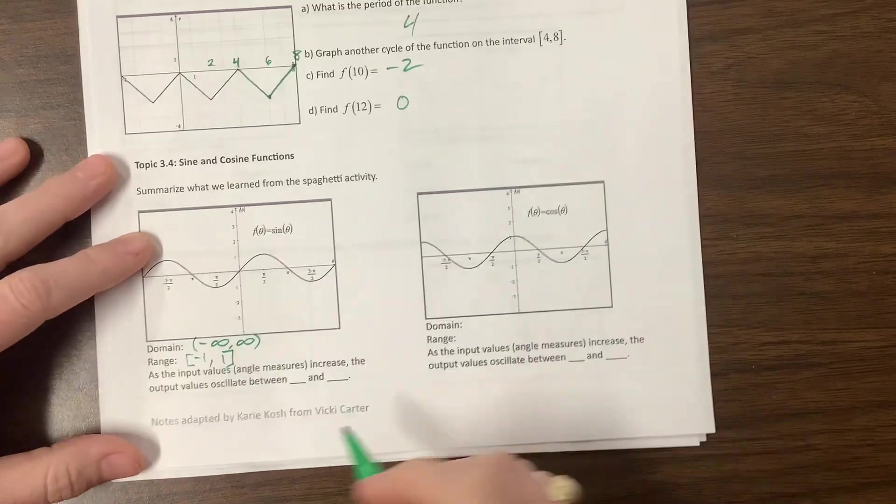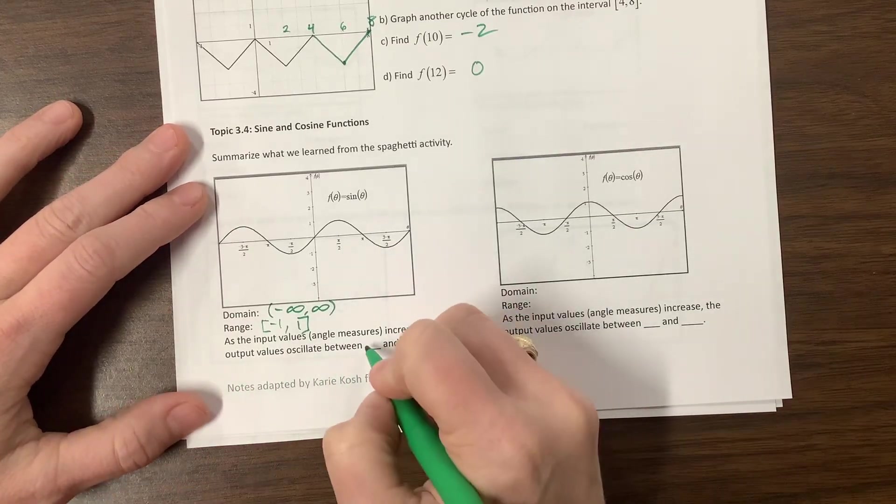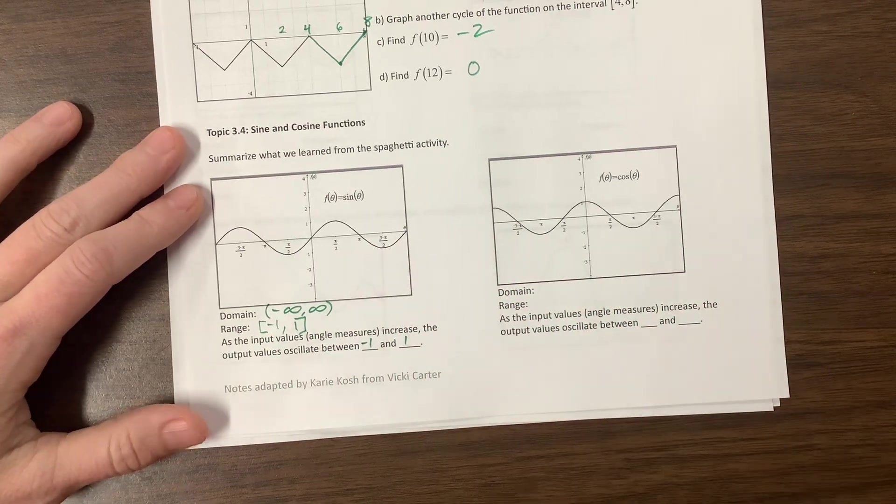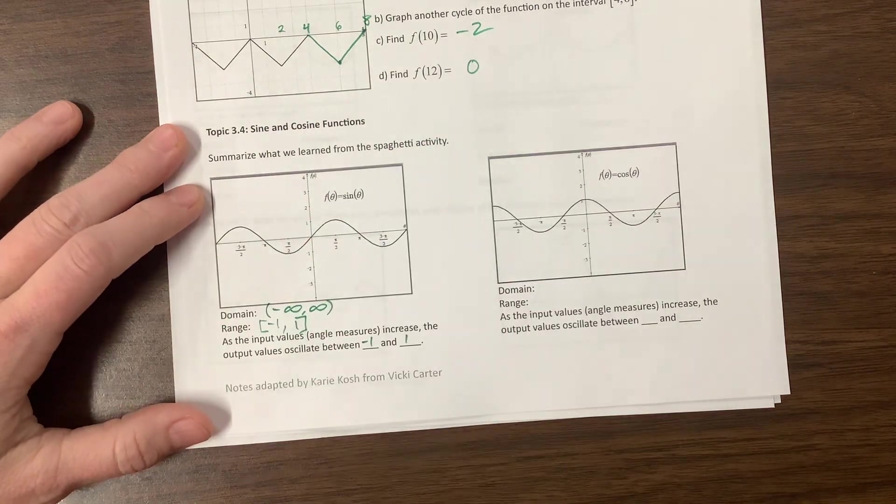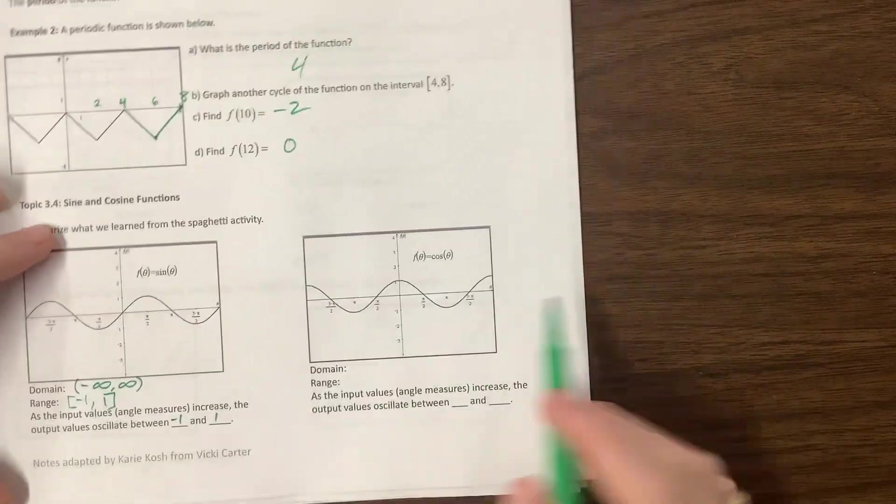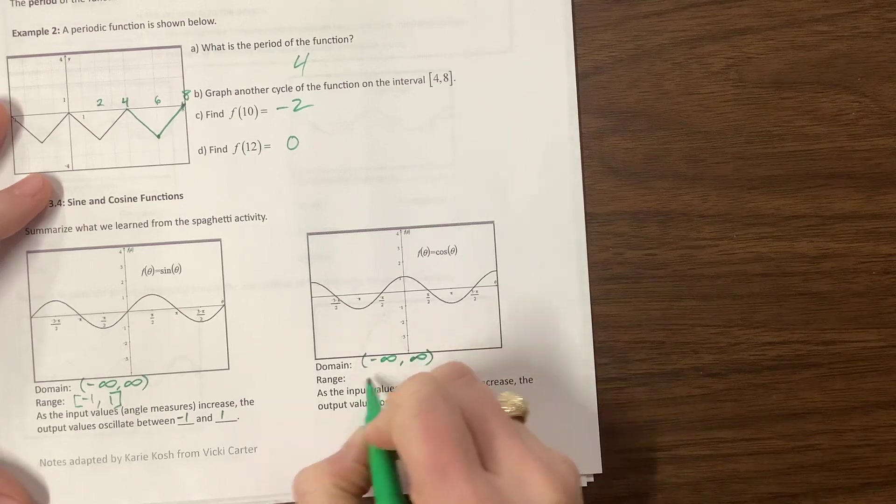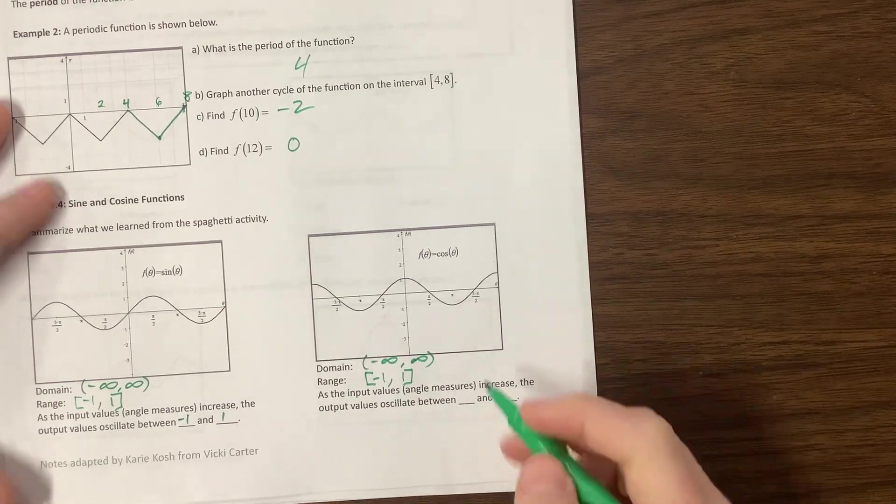For cosine, as the input values or the angle measures increase, the output values oscillate between negative 1 and 1, including negative 1 and 1. The domain of cosine is negative infinity to positive infinity. Its range is negative 1 to positive 1. It oscillates again between negative 1 and positive 1.